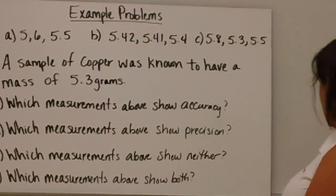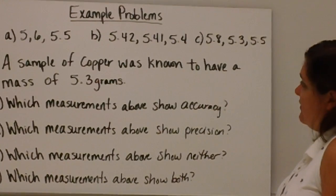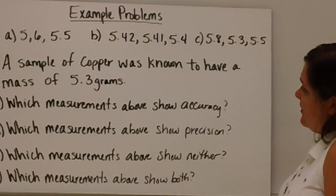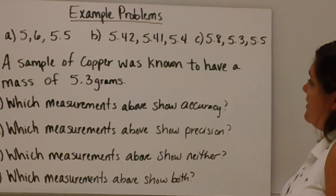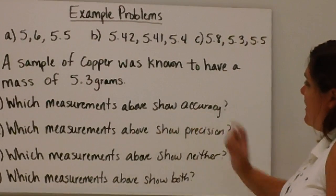If we look at this problem, we have three sets of numbers, measurements. A sample of copper was known to have a mass of 5.3 grams. Which measurements above show accuracy?